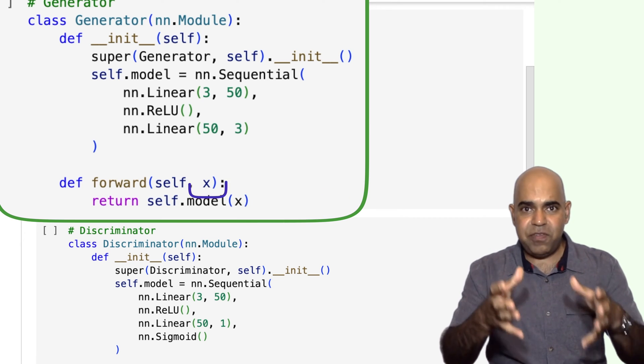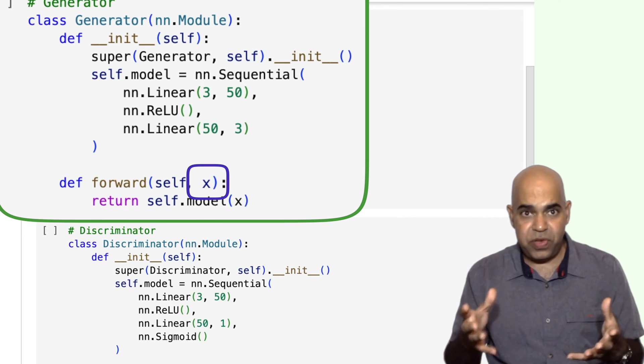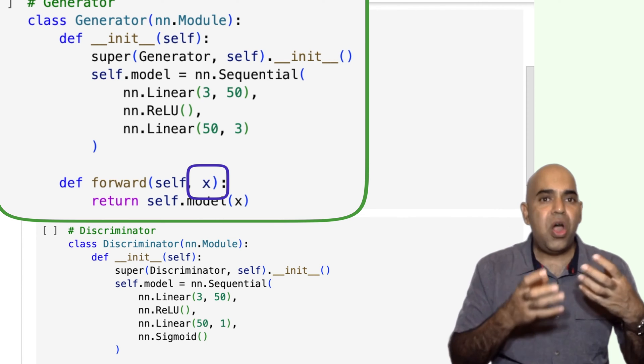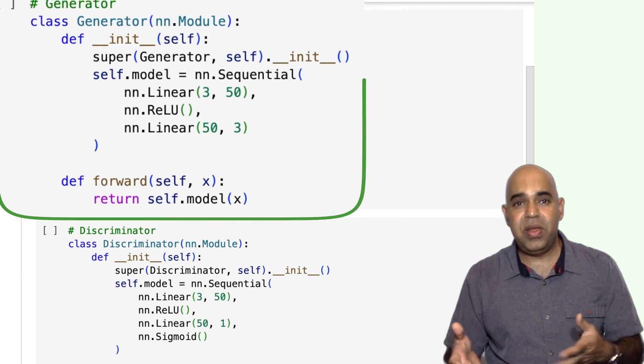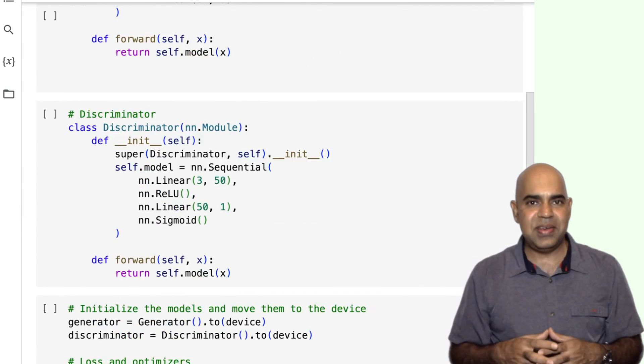The input x is passed through the defined model, and the output is returned. That is, given a vector, which is often referred to as noise or latent vector, the generator learns how to create another vector that resembles the training data.